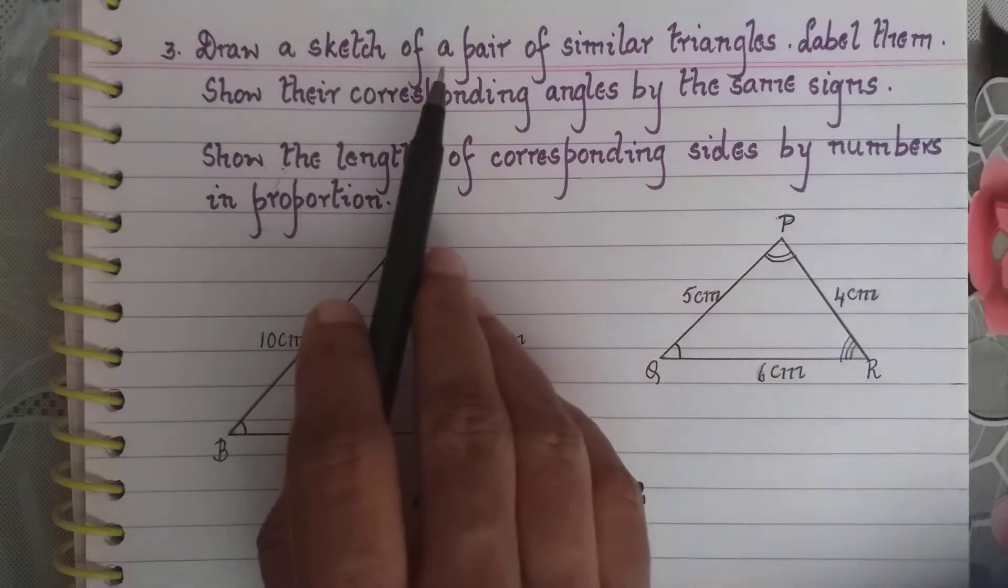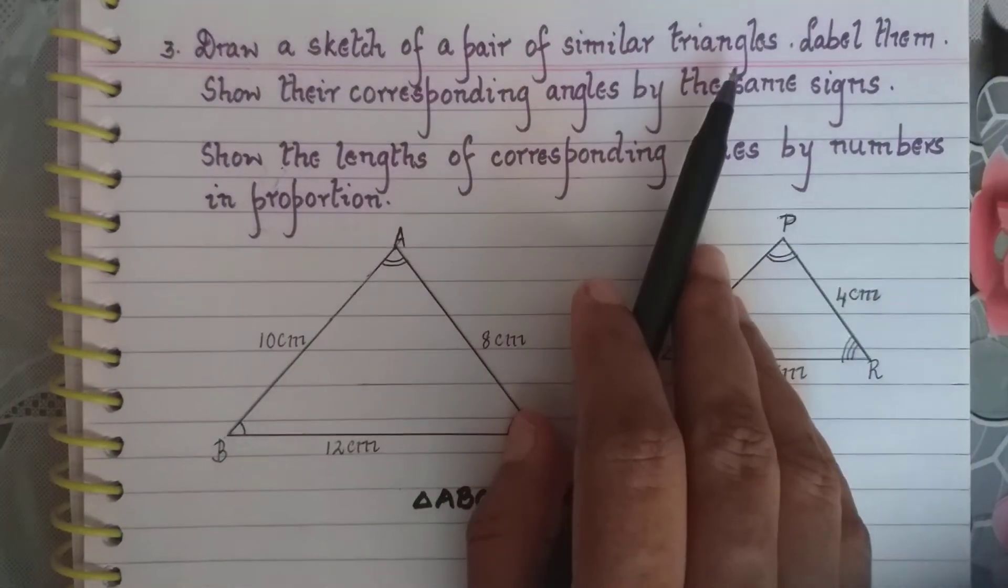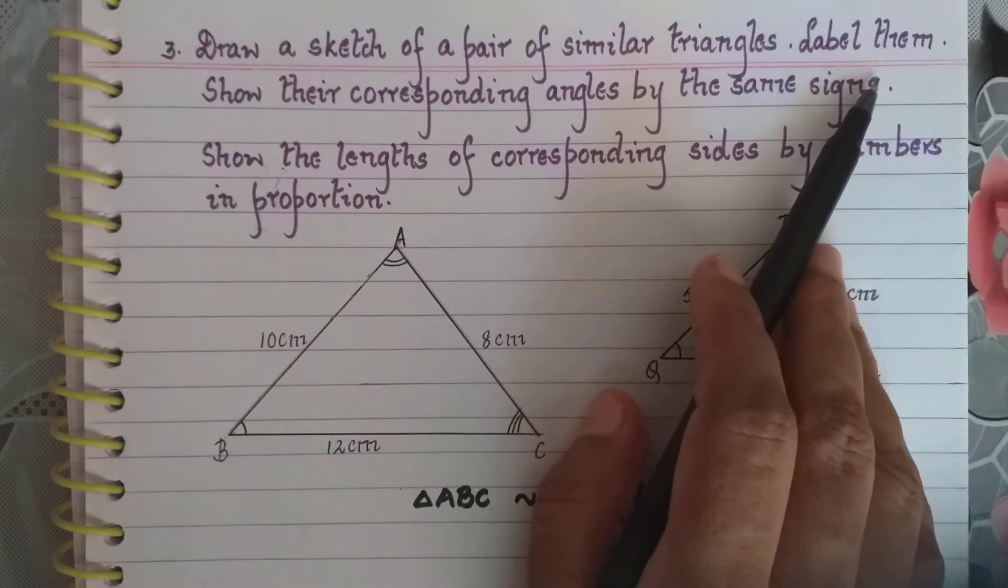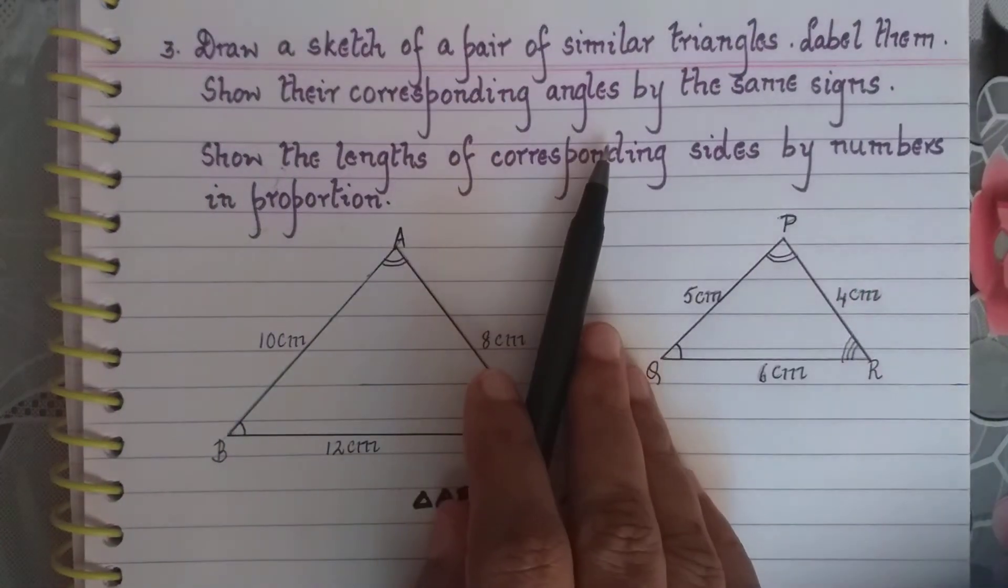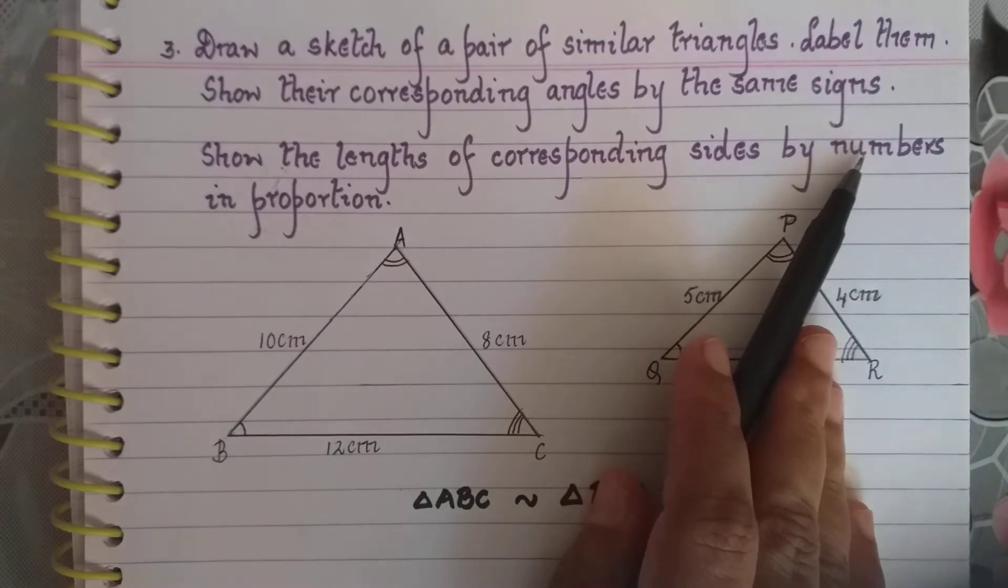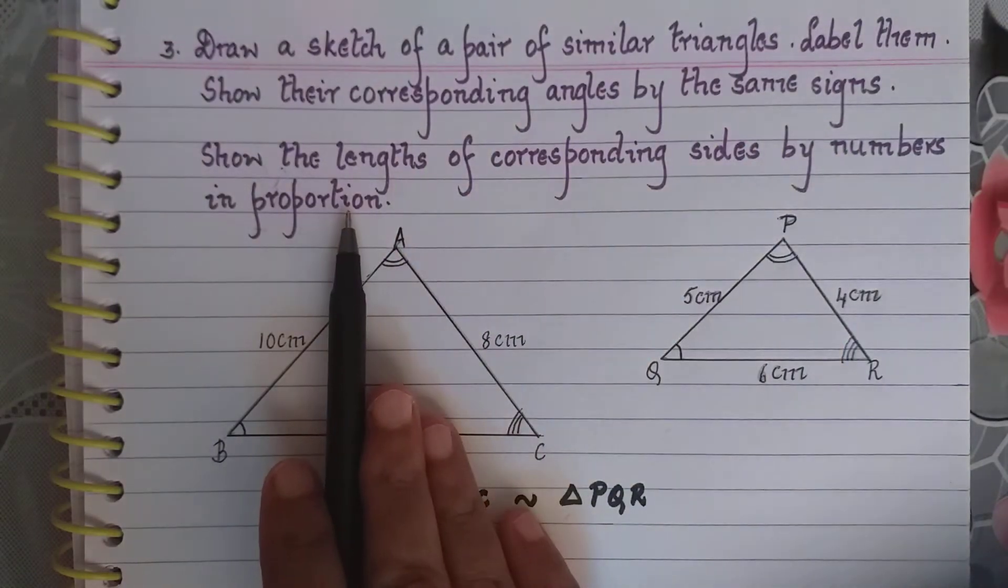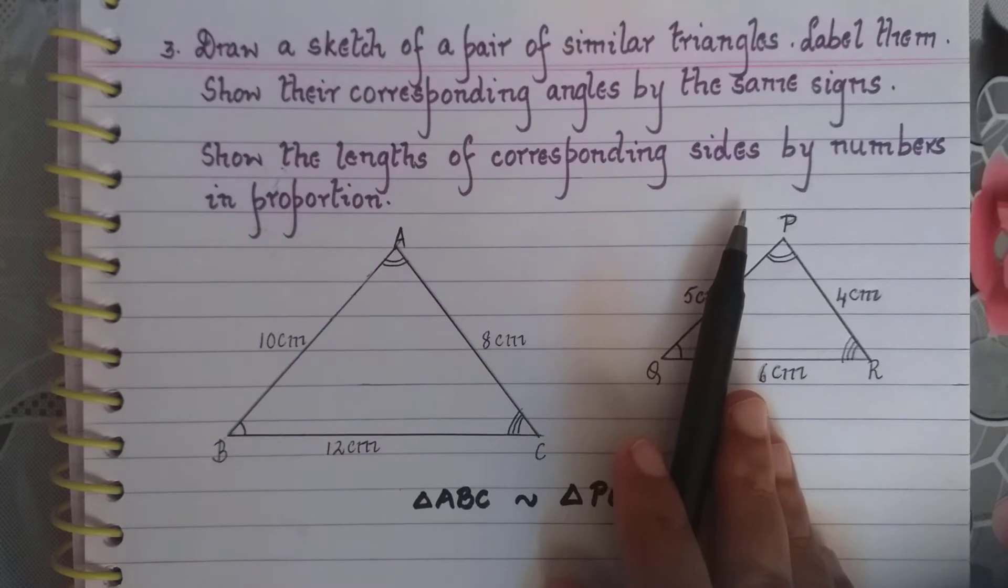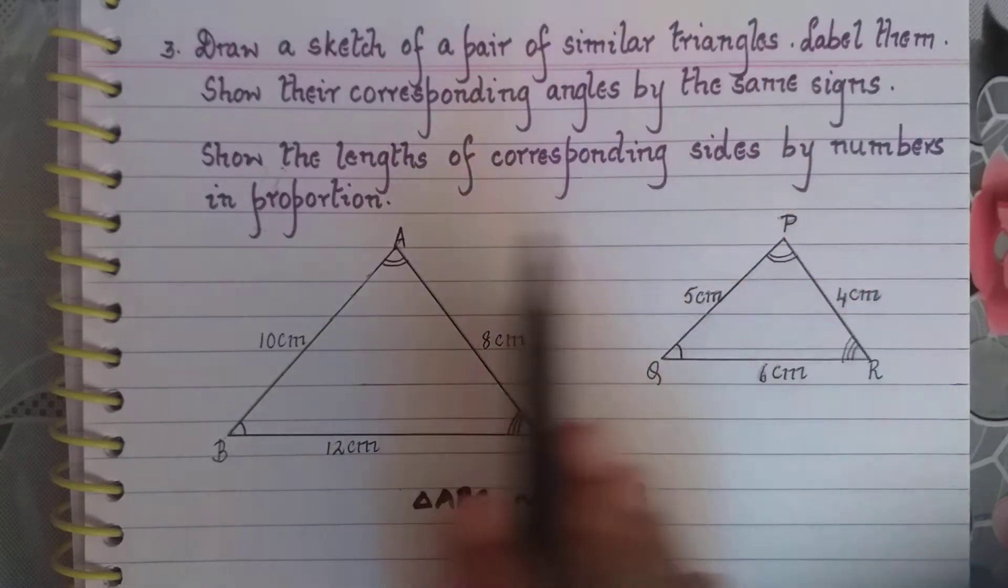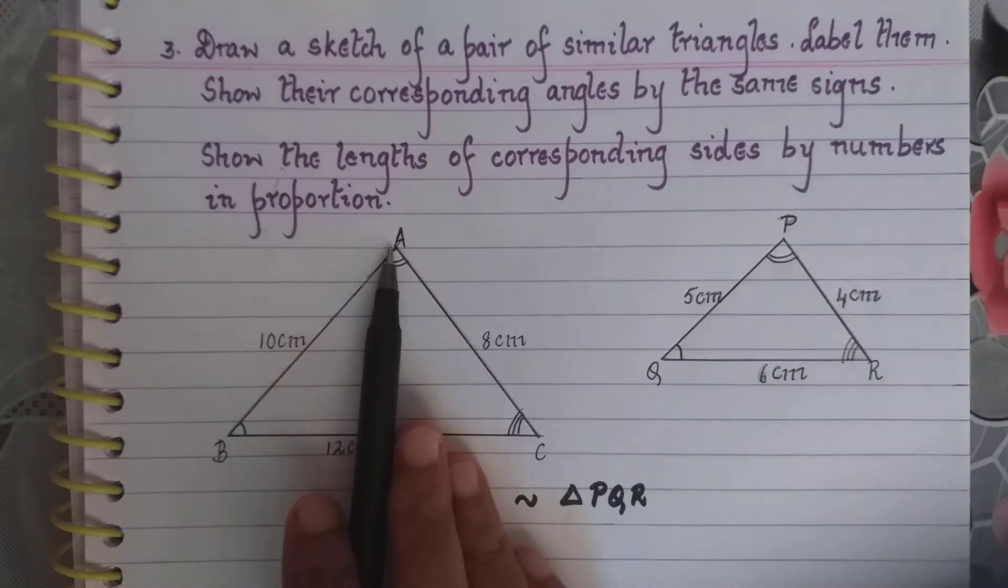The third question is: draw a sketch of a pair of similar triangles, label them, show their corresponding angles by the same signs, and show the lengths of the corresponding sides by numbers in proportion.